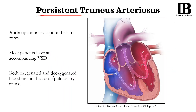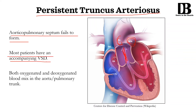The next disorder is persistent truncus arteriosus. This is where you have one trunk that accommodates both the aorta and main pulmonary artery — the aorticopulmonary septum completely fails to form and there is no septum separating the two. Most of these patients would have an accompanying VSD, which makes sense because the aorticopulmonary septum, as it's spiraling down, is forming the membranous portion of the ventricular septum. So if this fails to form, the membranous portion fails to form, and therefore they usually have an accompanying VSD. The blood from the right ventricle, which is deoxygenated, and the blood from the left ventricle, which is oxygenated, are therefore mixing in the common persistent trunk.